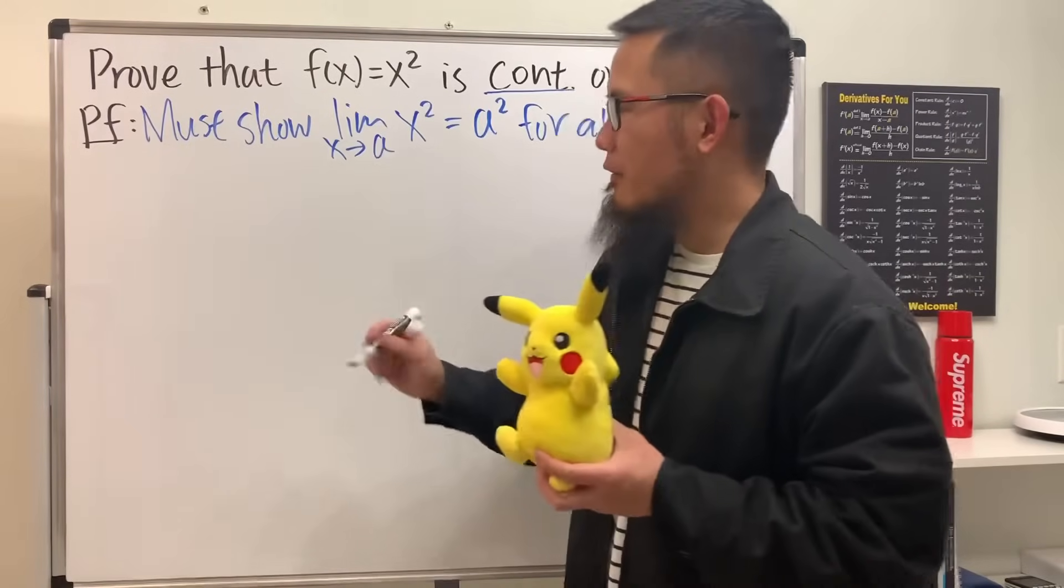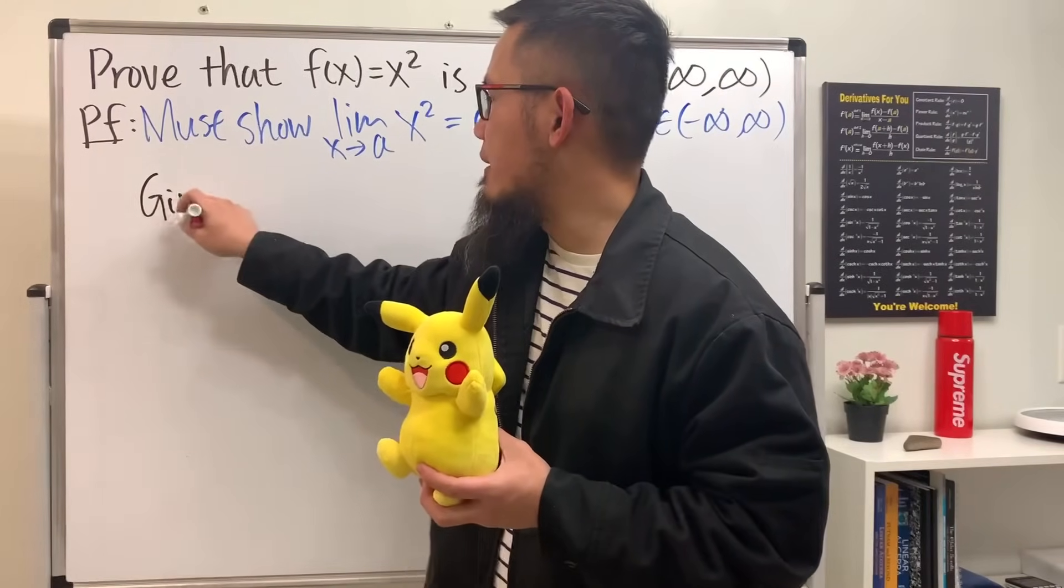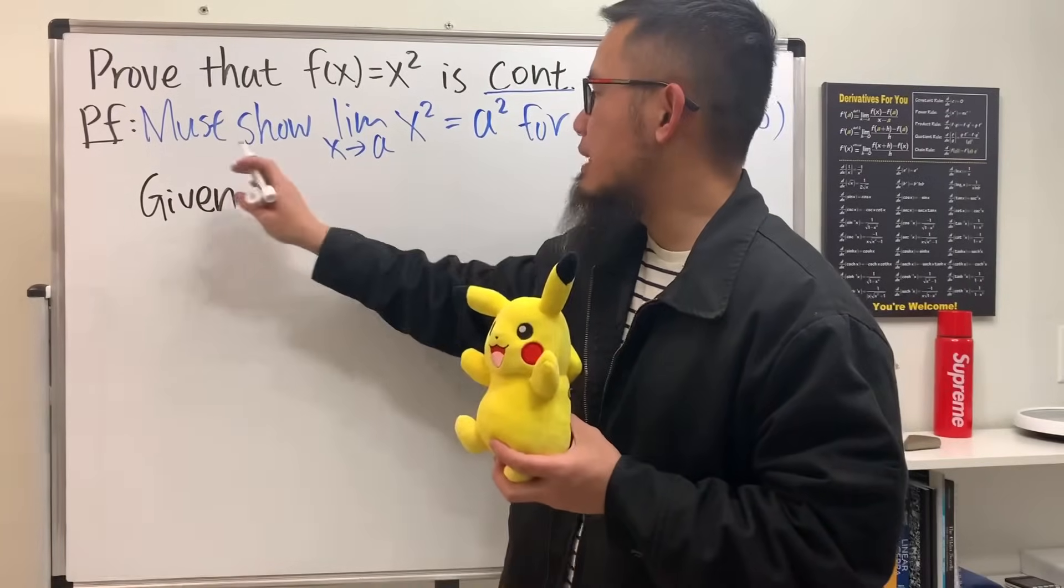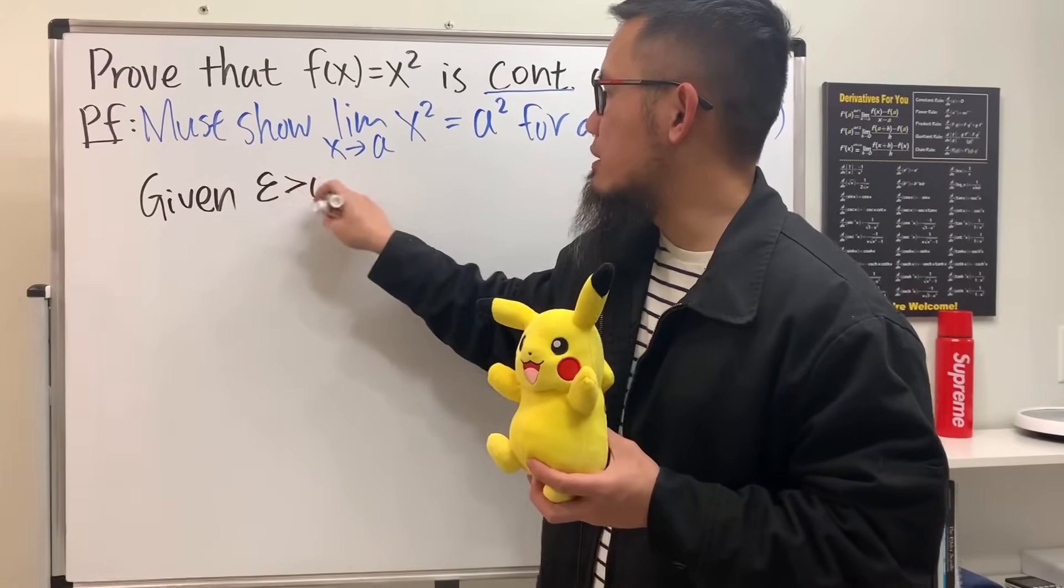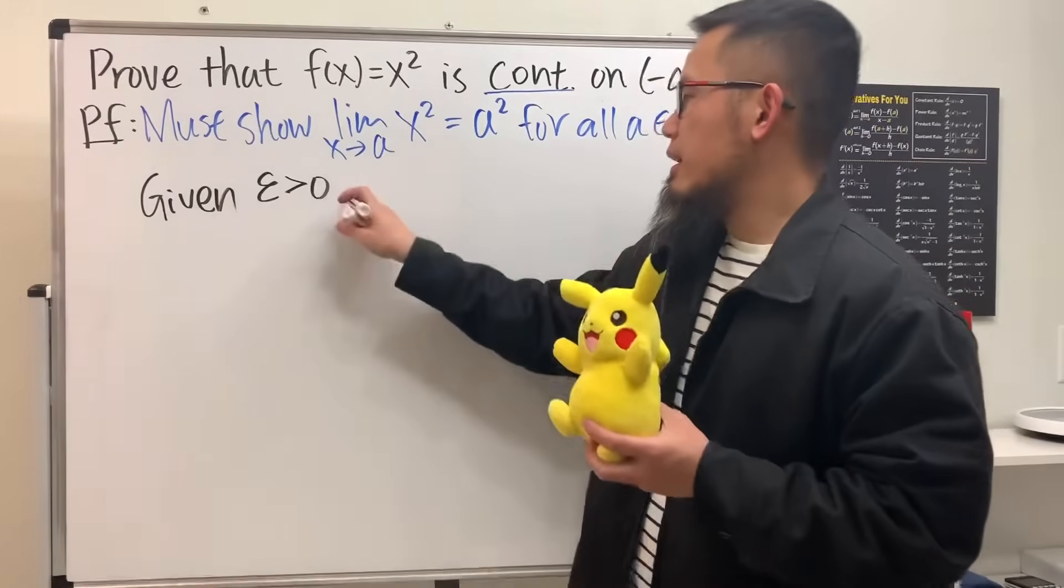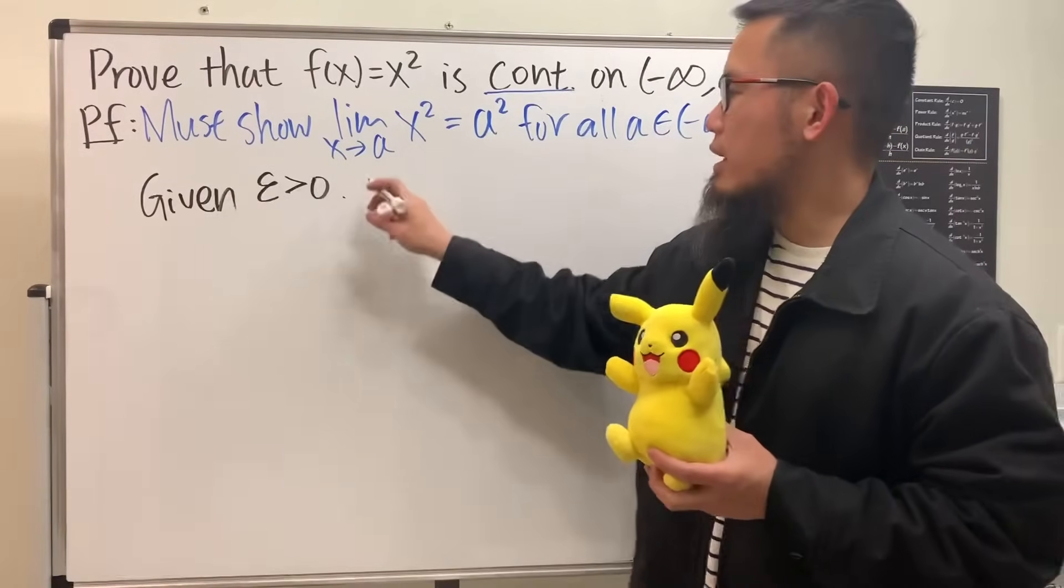Anyway, remember the four steps, the four keywords. First, go ahead and write down 'Given'. The first statement is that given epsilon is greater than zero. You always write that down first. Next, you write down 'Choose' delta to be...